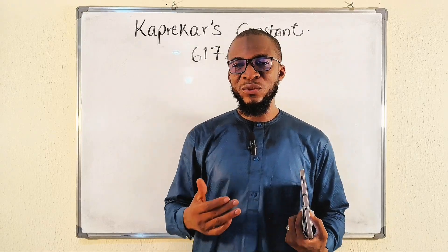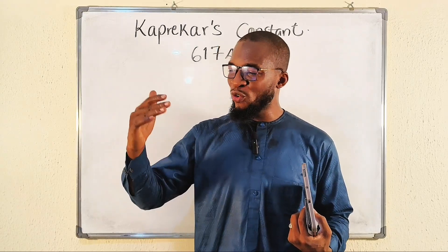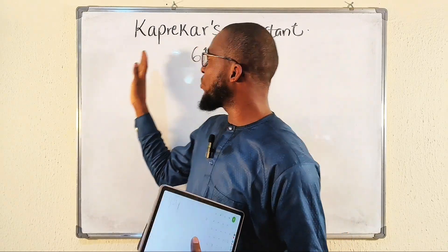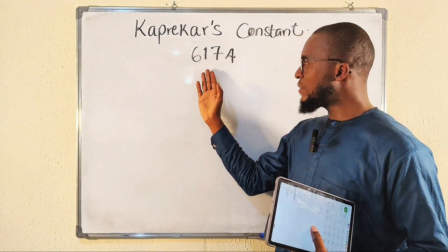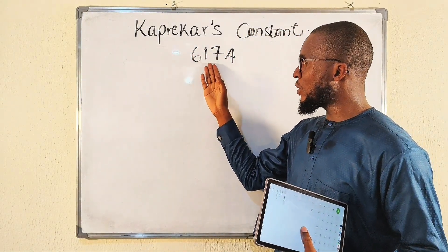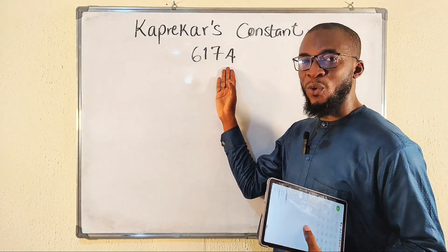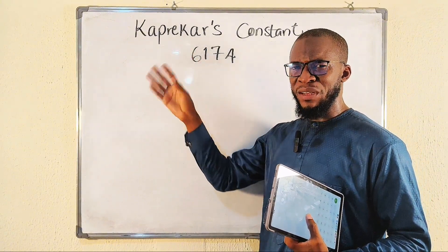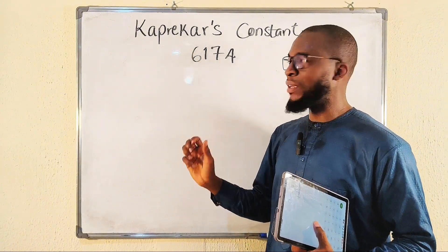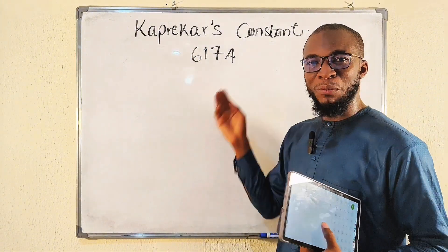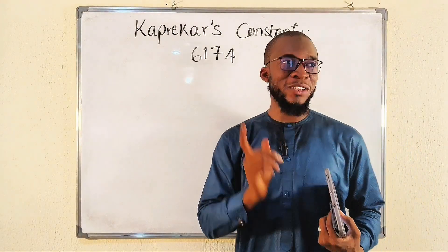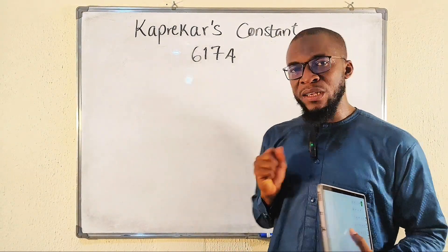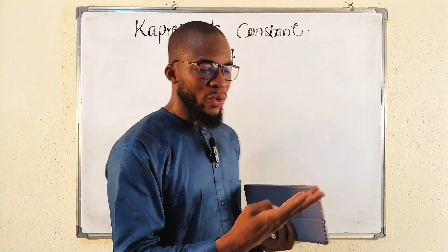Hello, dear viewers. In this tutorial we are going to go through the steps required to create Kaprekar's Constant. This is Kaprekar's Constant: 6174. This number was created by Mr. Kaprekar, who is an Indian mathematician. What is so special about this number? I can't say exactly — I only saw other creators talking about it.